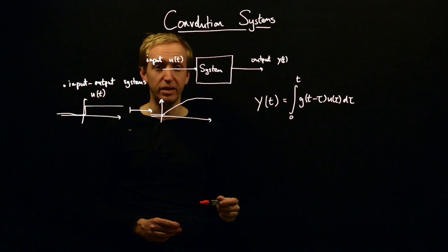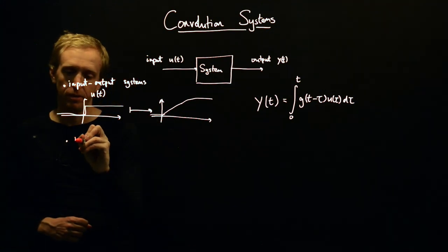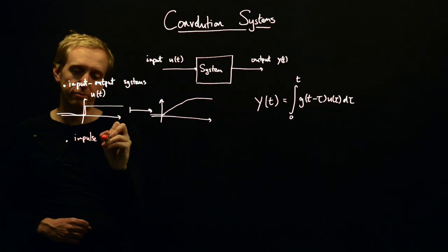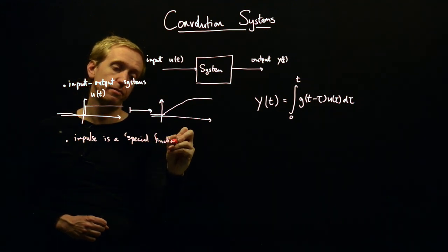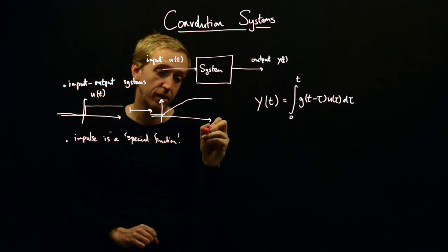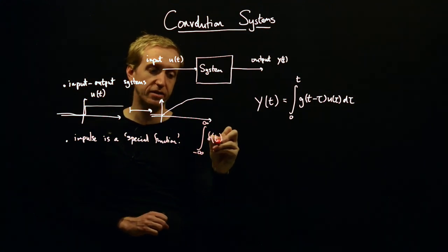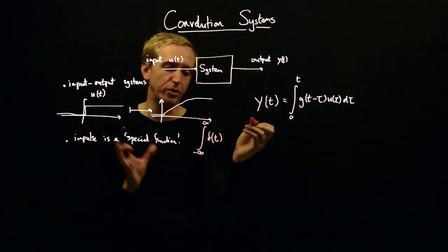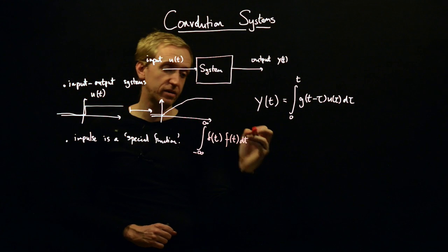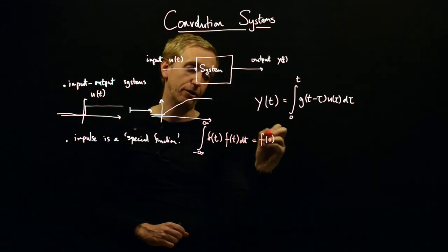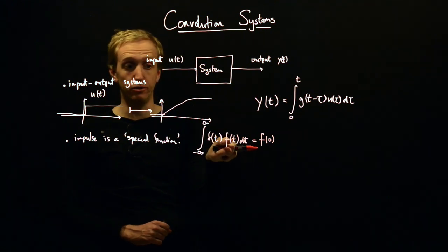What does 'impulse response' mean? An impulse is a special function — let's not worry about technical naming — with the following key property: given delta(t), if we take any function f(t) and integrate delta(t) · f(t) dτ, this returns the value of f at t = 0. So the impulse is a special function that sifts out a specific value of another function.